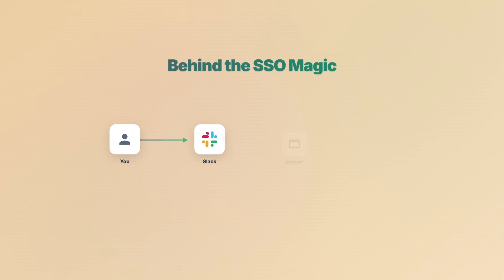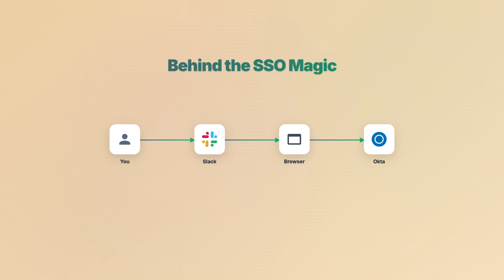Behind the scenes, it's a beautiful redirect dance. You hit Slack. Slack checks for a token — nothing there. Redirects you to Okta. Okta remembers you from this morning. Okta tells Slack, 'Yeah, that's Bob.' Slack lets you in. All of this? Under a second. You barely see it happen.